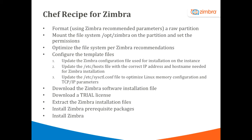We will configure the template files based on the environment, updating the Zimbra configuration file that will be used for the installation on the instance. We will update the /etc/hosts file with the correct IP address and host name for this instance. We will update the /etc/sysctl.conf file to optimize Linux memory configuration and TCP/IP parameters that work best with Zimbra. The Chef recipe will download the Zimbra software, download a trial license, extract the installation files, install Zimbra prerequisites, and then install Zimbra.